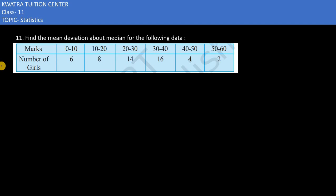Here in the 11th part of it, it says find the mean deviation about median. So what we need to do is we need to find the median for it. Now we have class intervals, number of girls which depicts the frequency.